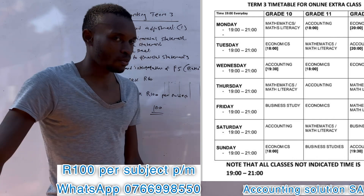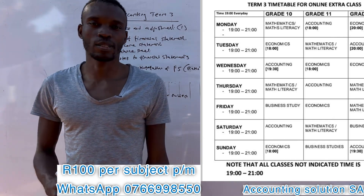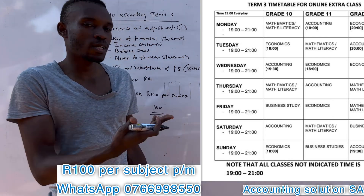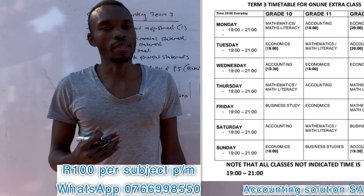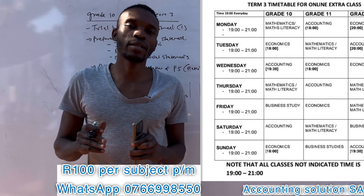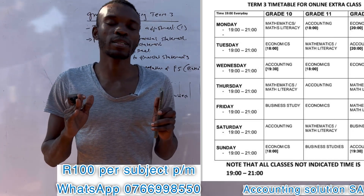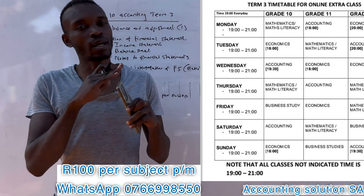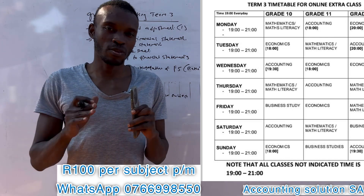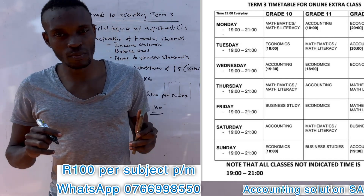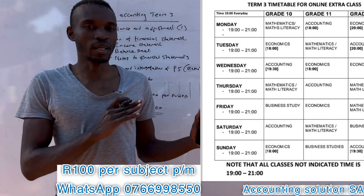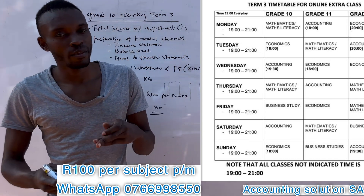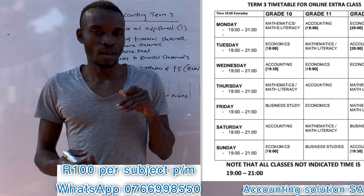The reason we added other subjects is because we don't want you to pass only accounting — we also want you to pass other modules. If you pass only accounting, even if you get 100, you are not going to get your grade 11 without passing other subjects. Each of those subjects is attended twice a week, and if you are part of the extra classes you have free unlimited consultation — you can ask anytime and we will assist you with your homework.